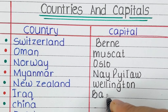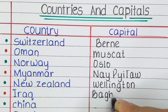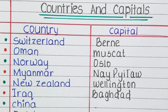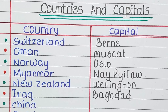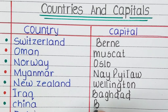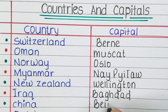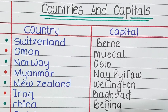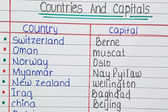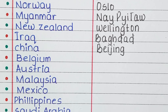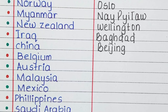Next is Iraq. The capital of Iraq is Baghdad. Next is China. The capital of China is Beijing.